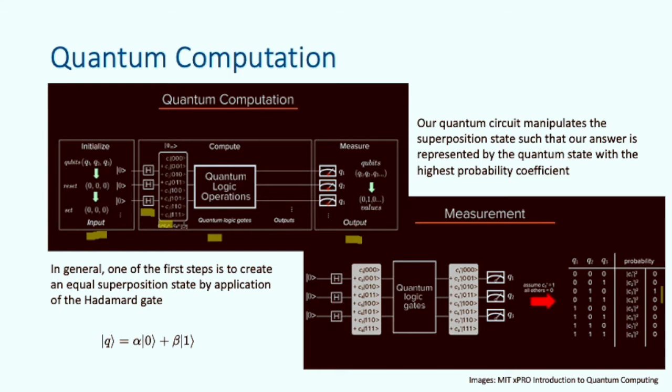Simply put, our program applies a sequence of quantum operations to the superposition state in order to reduce the probability amplitudes of incorrect solutions and increase the probability amplitudes of desired solutions. The fact that our result is just the solution with the highest probability means that we have to run our circuit many times to actually get the right answer. And we'll see this when we look at the IBM quantum experience.